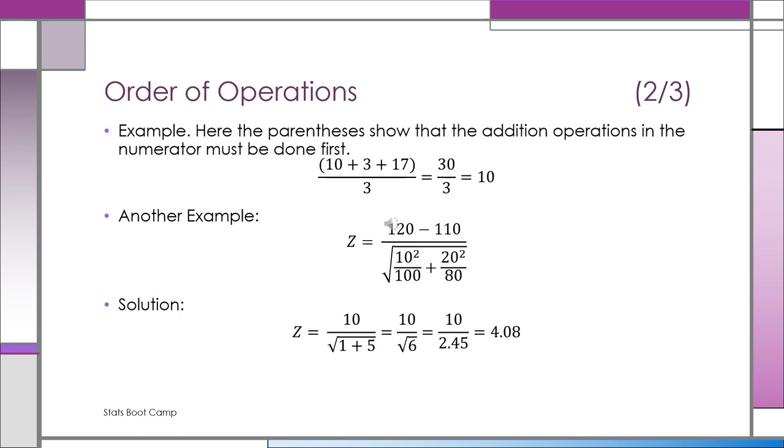In the second example, we have Z equals, and by the way, you're going to come back to that Z over and over again once we start the statistics course and get it rolling. But in this particular example, Z is equal to 120 minus 110 on the numerator. And imagine there's parentheses around that because it's in the numerator, it's going to be done first. And then in the denominator, we have a bunch of stuff: two fractions under a square root, and each of the fractions has a square in the numerator. That's kind of complicated.